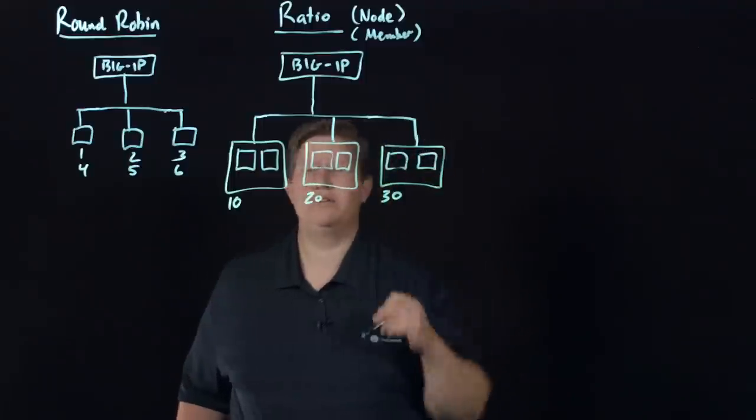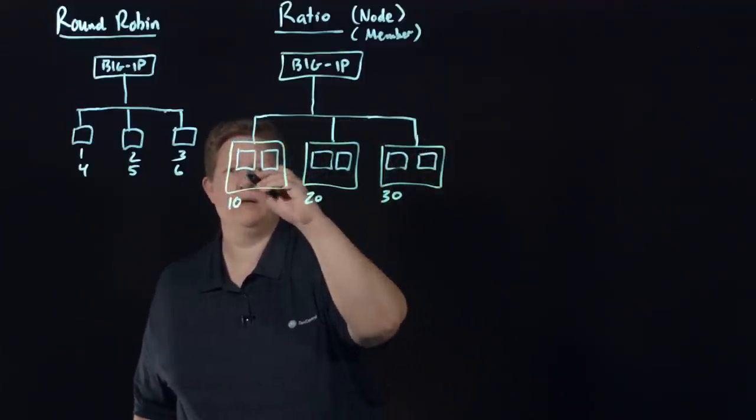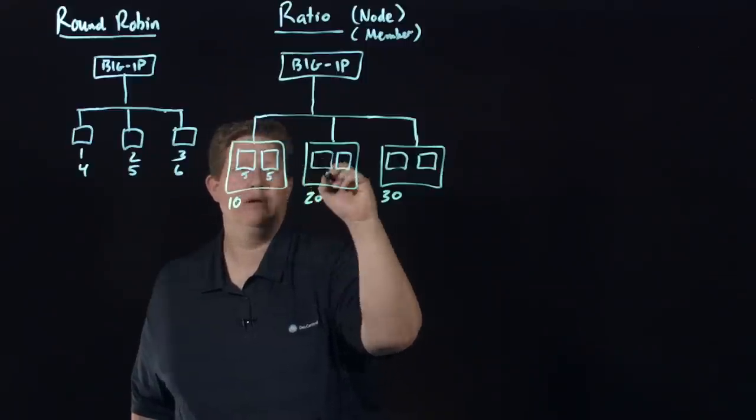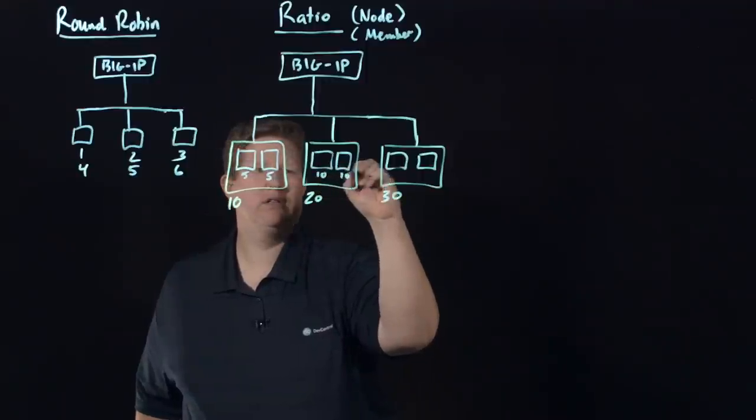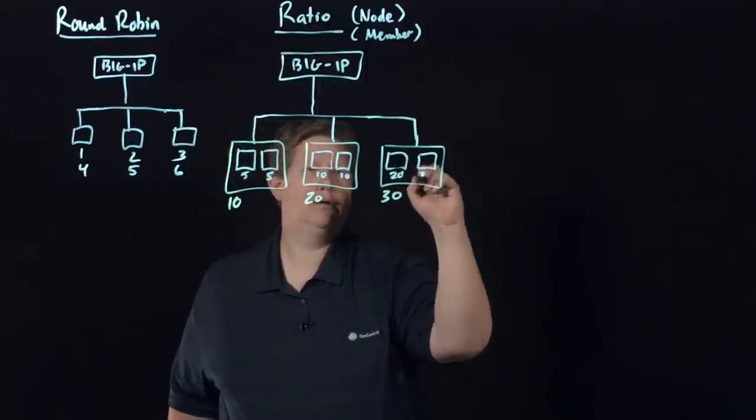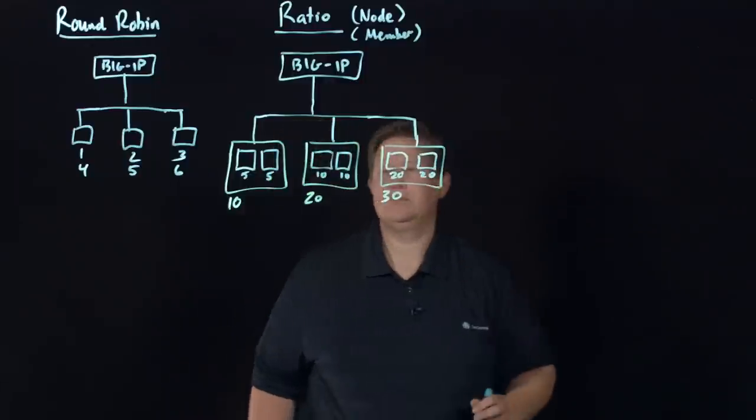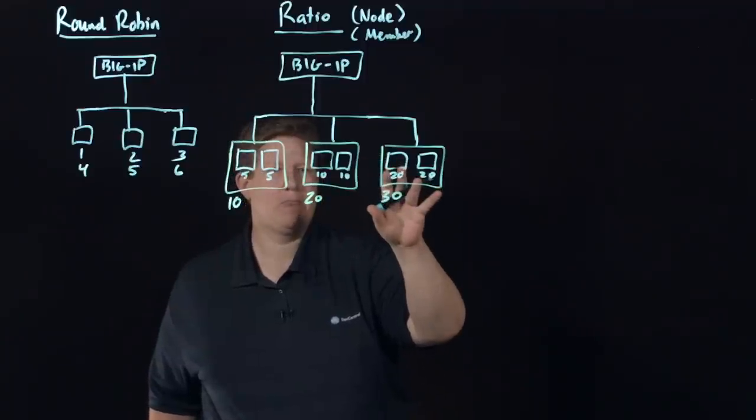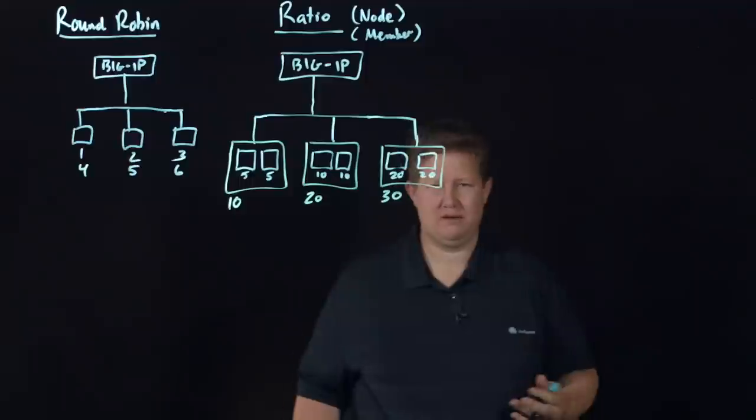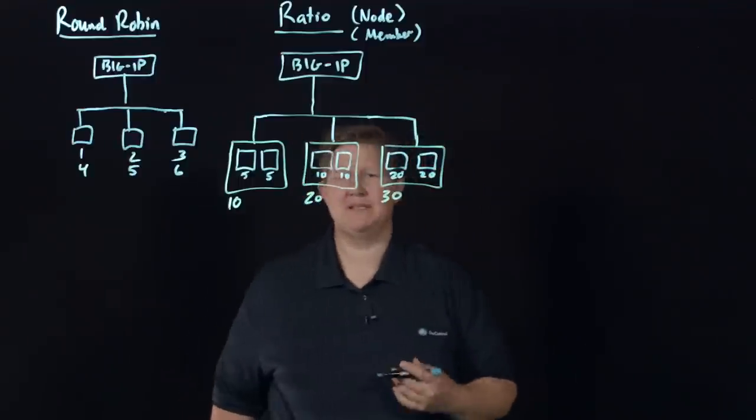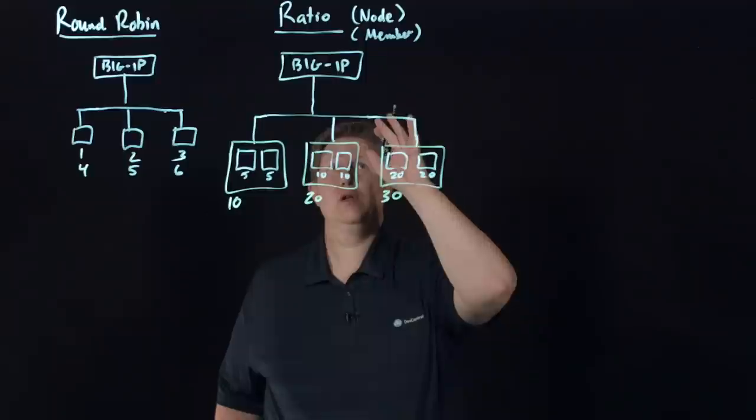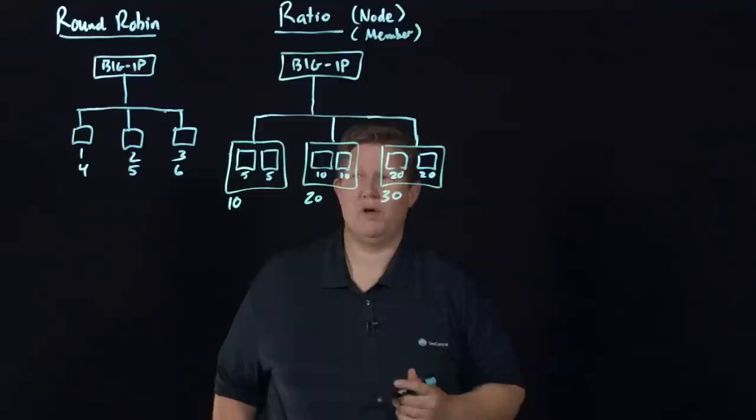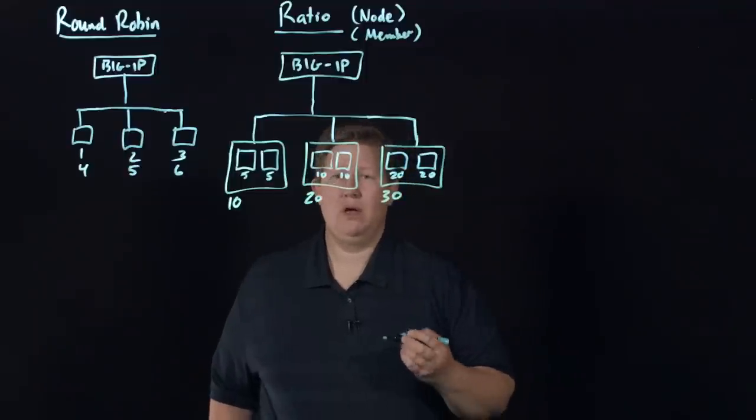Say at a node level I have a ratio of 10, 20, and 30. Then within a particular pool I have a pool member in there. These are pool members and say on the pool members themselves I have 5, 10, and 20 configured.